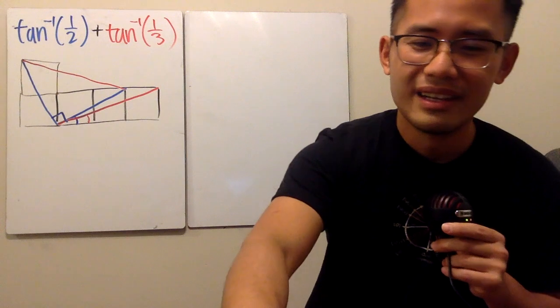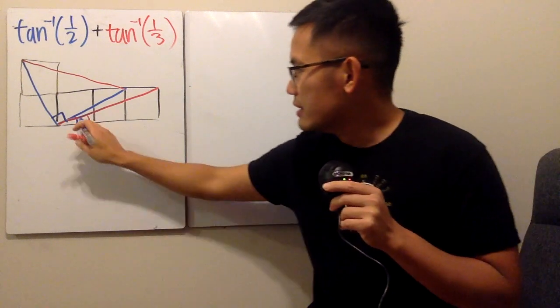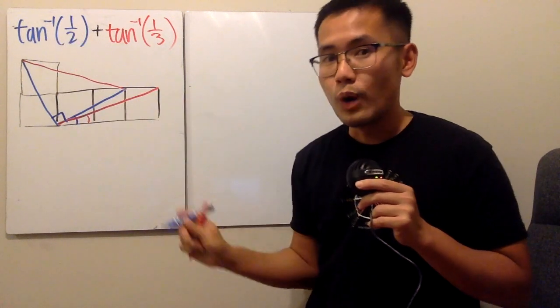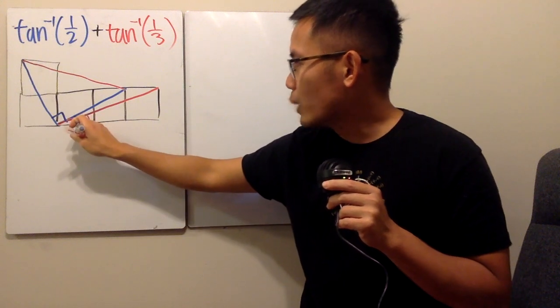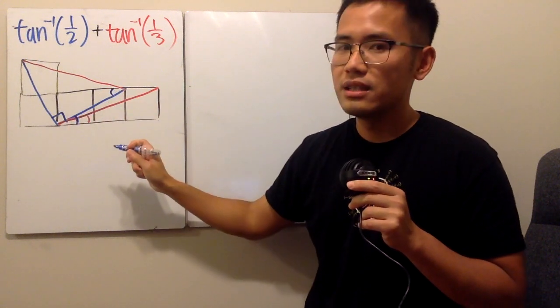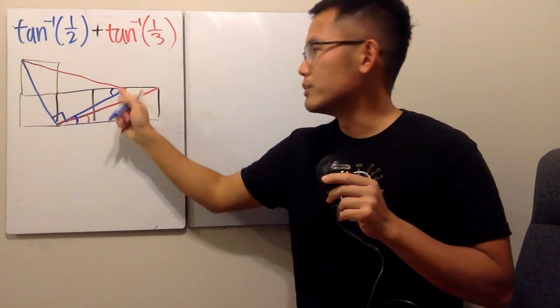Have a look now. Earlier, we talked about this angle in blue is inverse tangent of 1 half. Well, if this is inverse tangent of 1 half, so is this, isn't it? Yes, it is. 1 over 2, right?